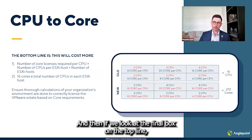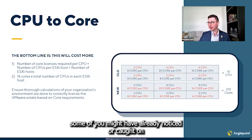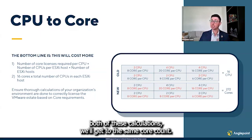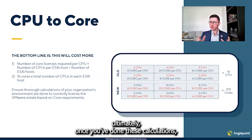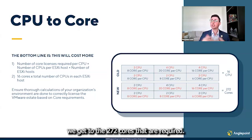And then if we look at the final box on the top line, some of you might have already noticed or caught on that both of these calculations will get to the same core count. We'll have 64 cores. And so in this example, ultimately, once you've done these calculations, we get to the 272 cores that are required.